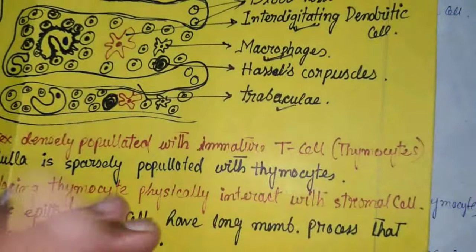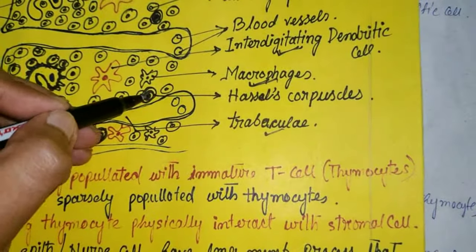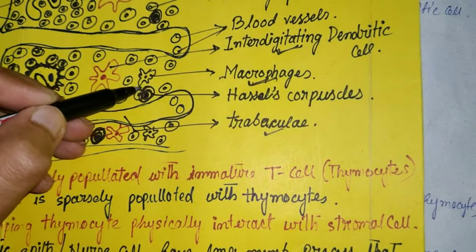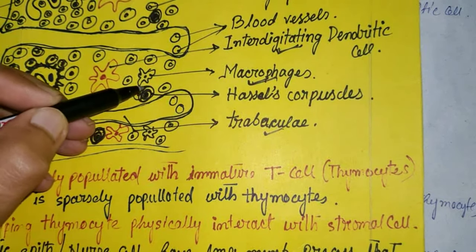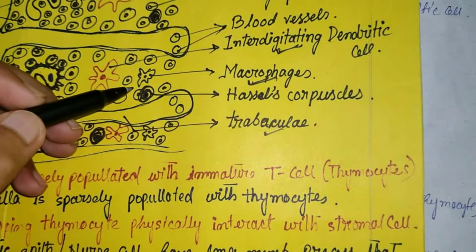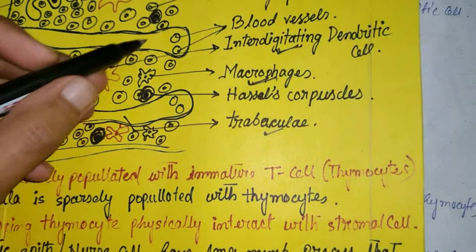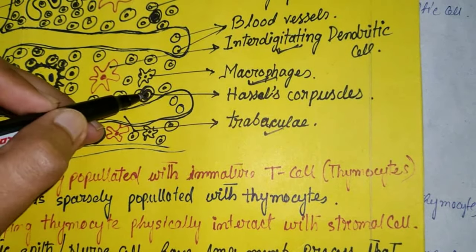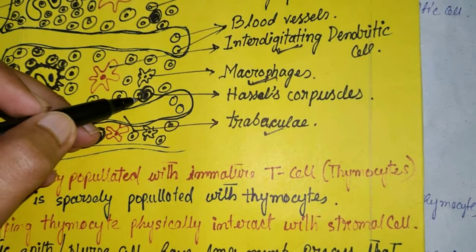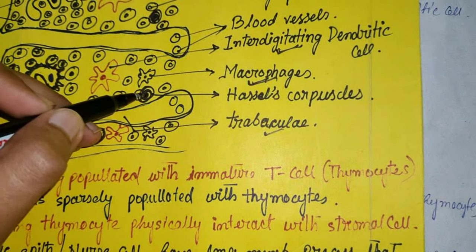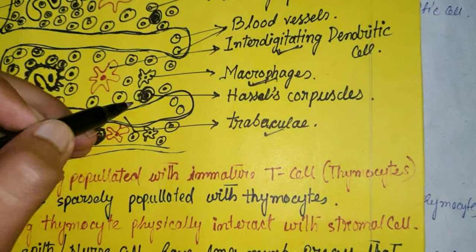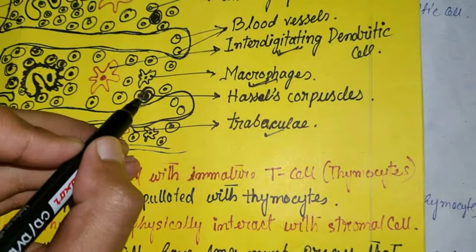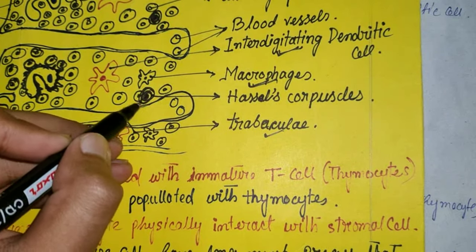So Hassall's corpuscle is made of eosinophilic type 4 epithelial reticular cells arranged concentrically. Two things are deposited here: keratohyaline and bundles of cytoplasmic fibers. The function of Hassall's corpuscle has not been fully established yet by science.